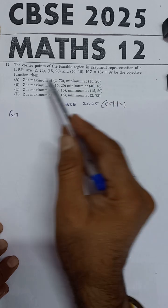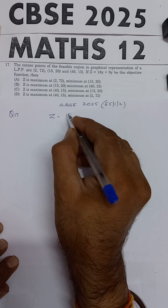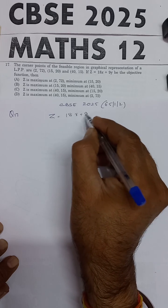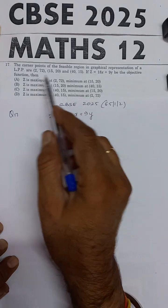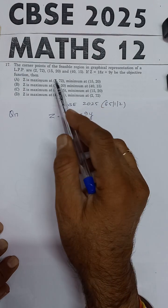The objective function is z equals 18x plus 9y. You have to find out at which of these points the objective function is taking maximum value and at which point it is taking minimum value.